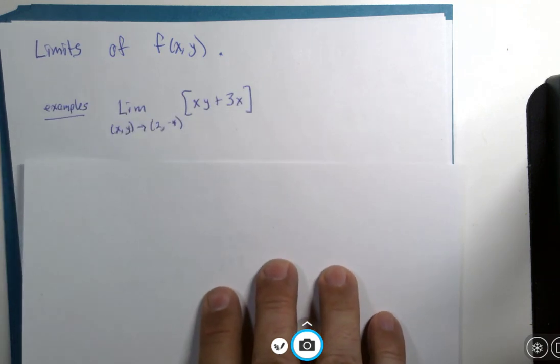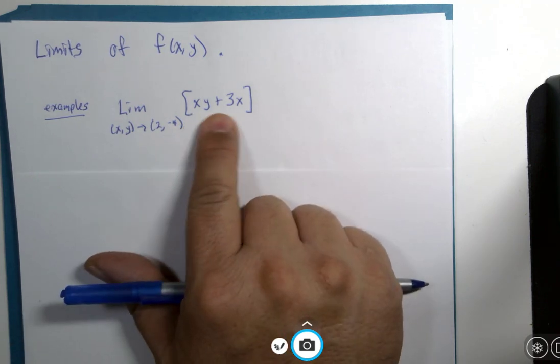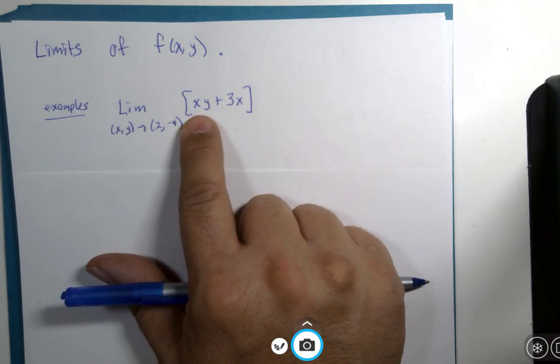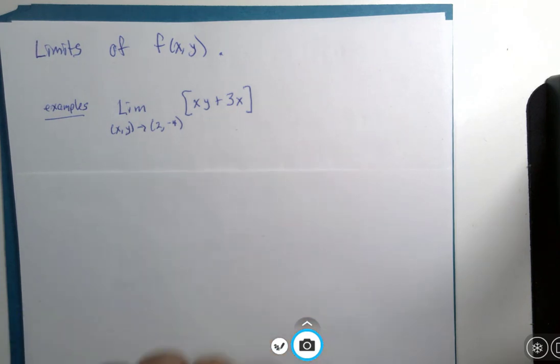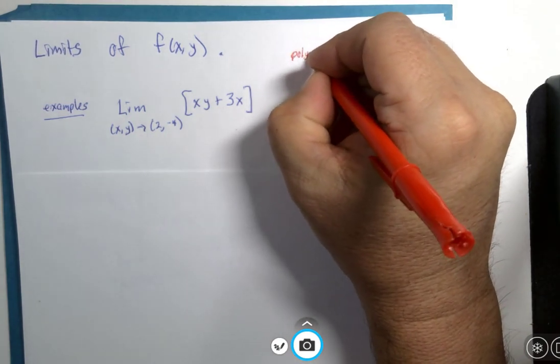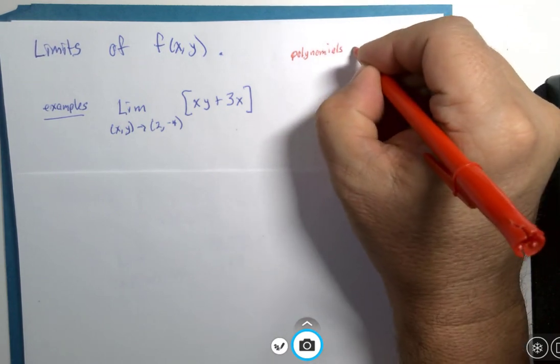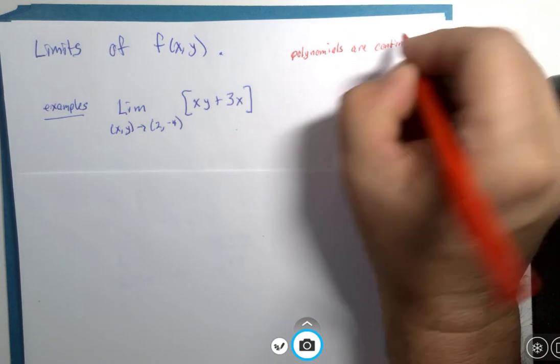The first property is this. If the function that you're working with is of a polynomial form, so this is xy plus 3x, we know that polynomials are considered continuous functions.